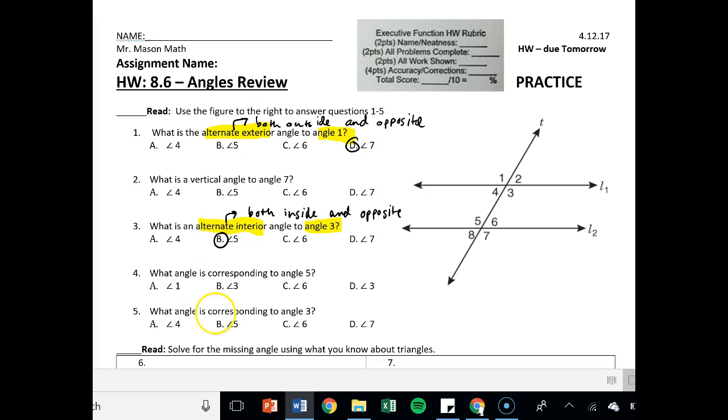Number five, what angle is corresponding to angle three? Corresponding is same side and skip. So angle three, what's on the same side as angle three, where I skip an angle, that's angle seven, right? So D.